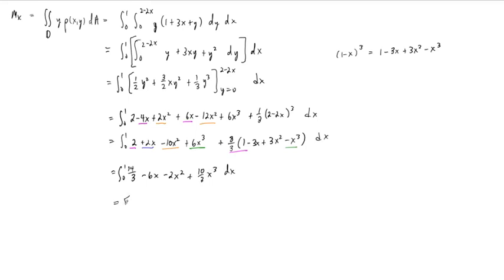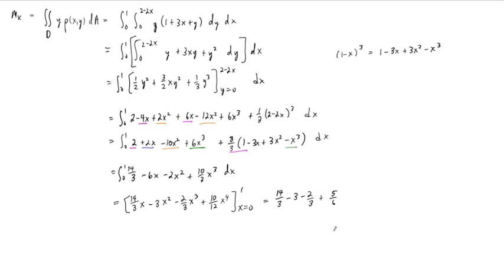So we integrate from 0 to 1: (14/3) minus 6x minus 2x squared plus (10/3)x cubed dx. The antiderivative evaluated at x equals 1 gives (14/3) minus 3 minus (2/3) plus (10/12), which simplifies to (14/3) minus 3 minus (2/3) plus (5/6). Converting to sixths: 28/6 minus 18/6 minus 4/6 plus 5/6 equals 11/6... that's 9/6, which is 3/2. So M_x equals 3/2.